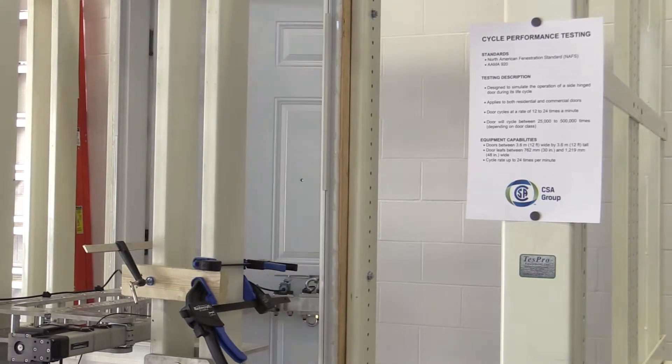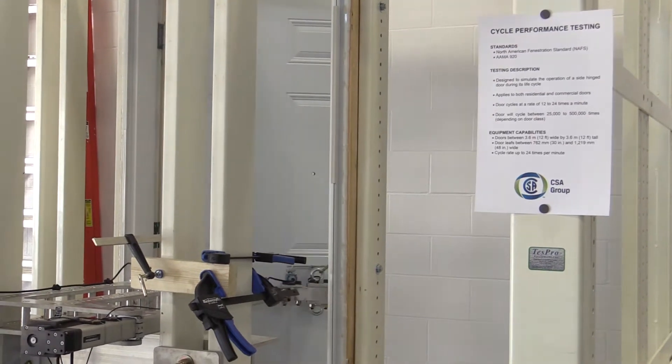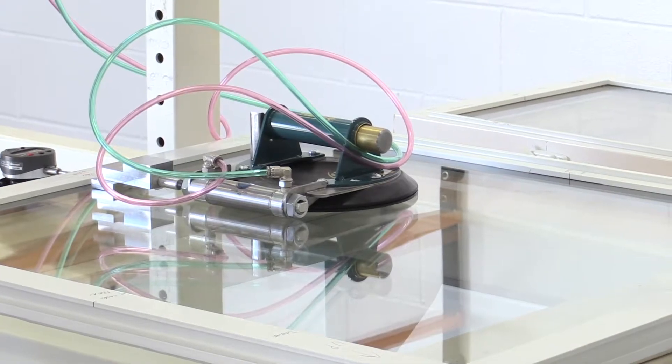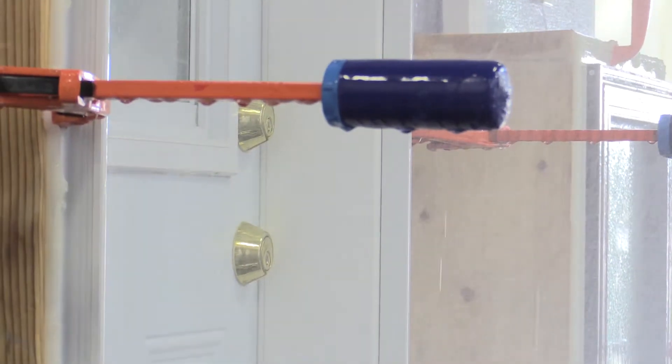What we are testing for is basically the performance. That's why this door opens and closes about 25,000 or up to over half a million cycles. This is one of the tests. We test for deglazing, forced entry, water penetration or spray penetration.